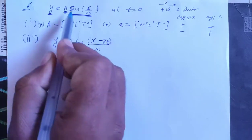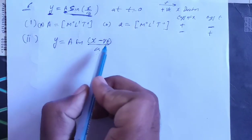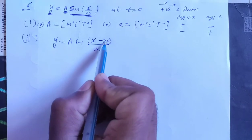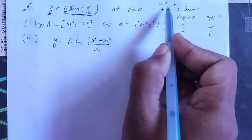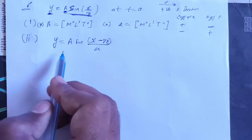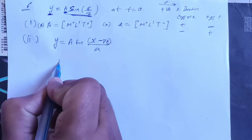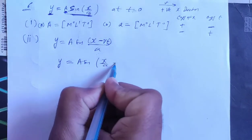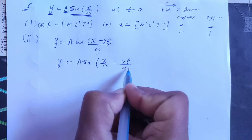Now here t equals 0, put so this quantity is 0, x/a is exactly right. I have minus because if x is plus then t will be minus, then it will be positive direction. So this equation: A sin(x/a minus vt/a).